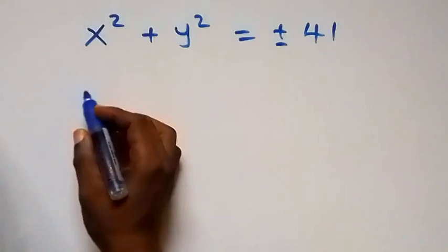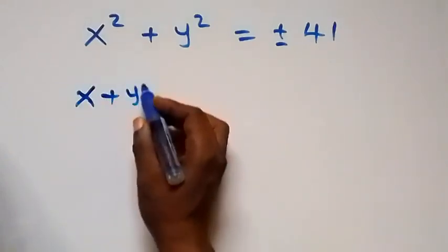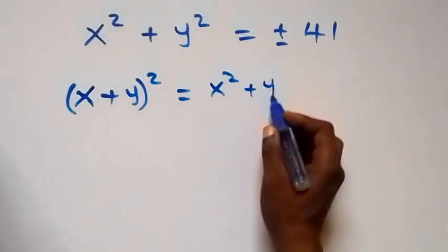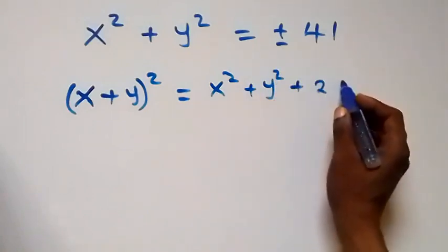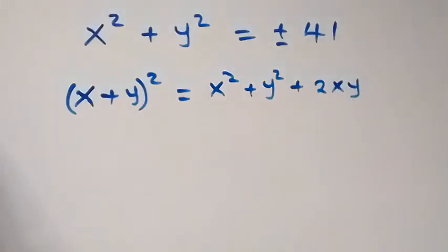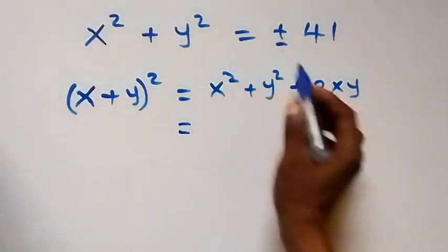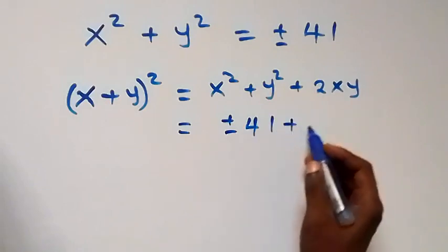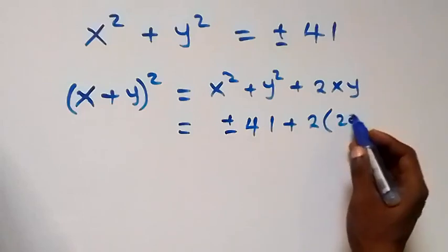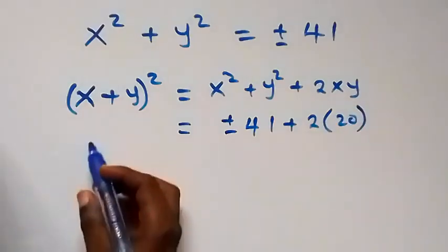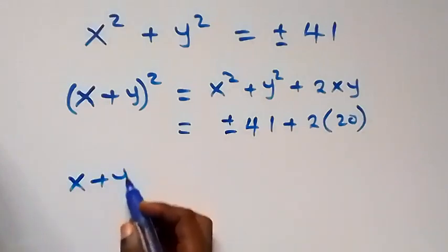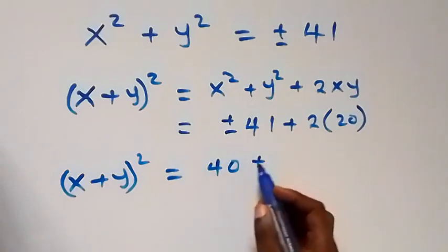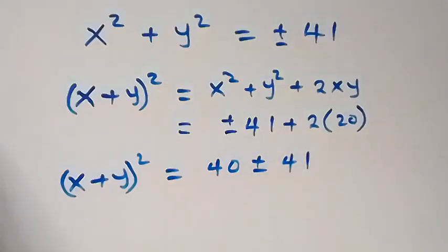Now from the expansion of x plus y, all squared, we get x squared plus y squared plus 2xy. Substituting x squared plus y squared as plus or minus 41, and 2 times xy as 2 times 20 which is 40, we get x plus y squared equals 40 plus or minus 41.